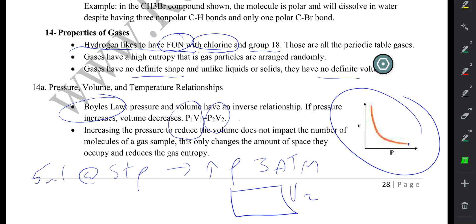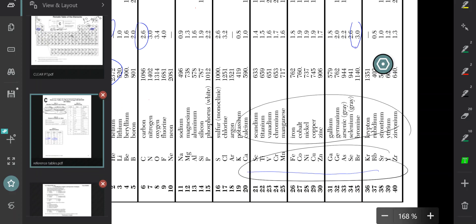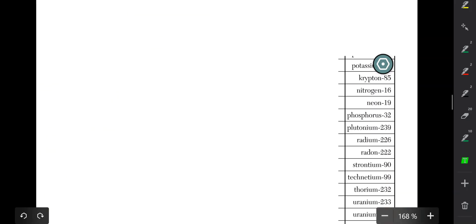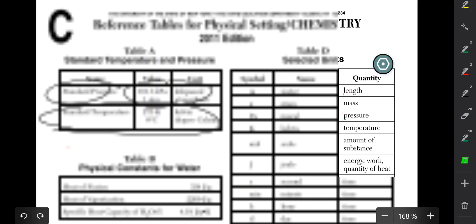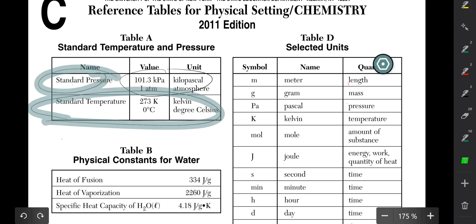So first thing is, what is STP? STP is standard temperature and standard pressure. If we look at table A of the reference tables, here's your standard temperature, 273 degrees Kelvin, and here's your standard pressure, 1 atm.